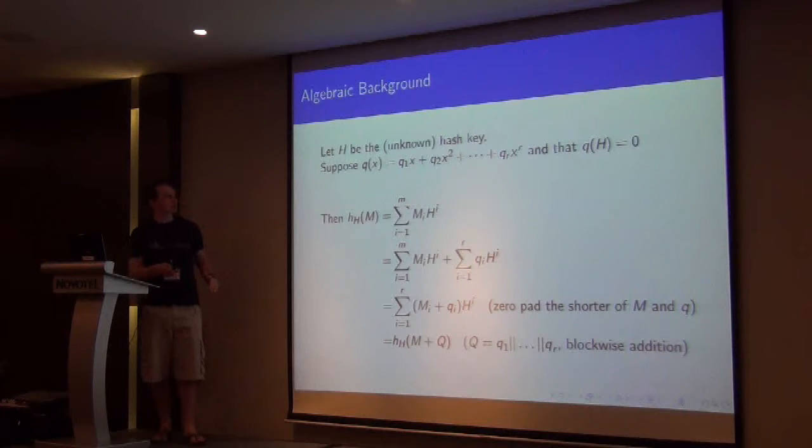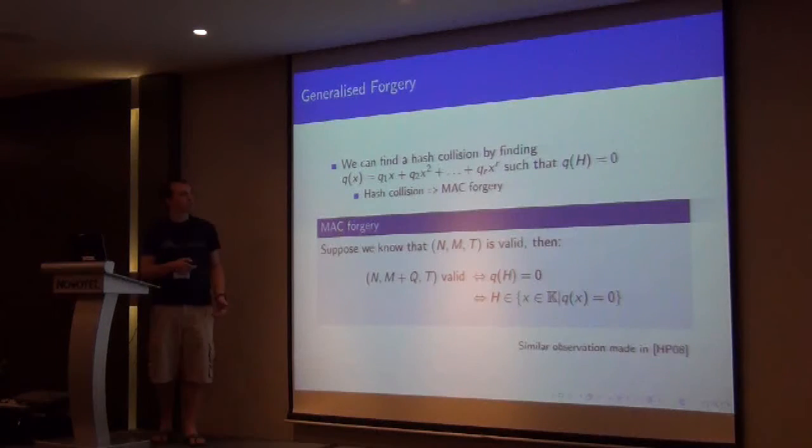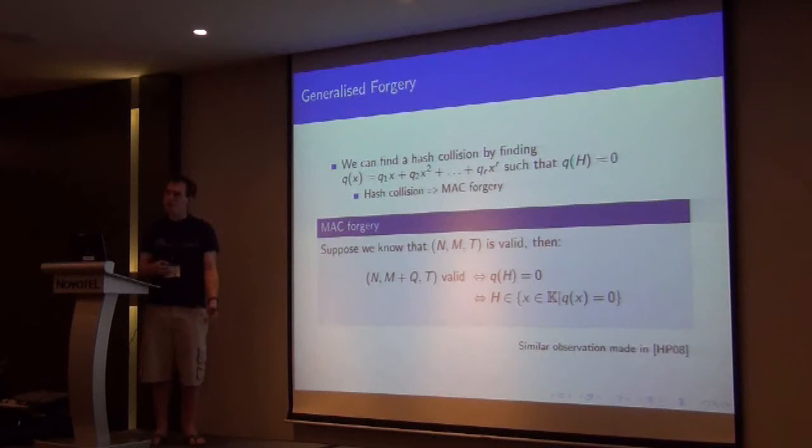And so what we've done is starting from a polynomial, where we know that q of h is 0, we've got a hash collision. And as we said earlier, we've got a hash collision and we've got a MAC forgery.